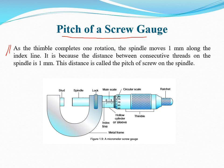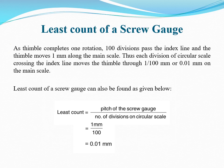Just like Vernier Calipers, here again there are two scales: one is the main scale and the other is the rotating circular scale. The pitch of the screw gauge is defined as: when the thimble completes one rotation, the spindle moves one millimeter along the index line. If we rotate this circular scale in one complete rotation, it moves on the main scale by a distance of one millimeter. This is called the pitch of the screw gauge.